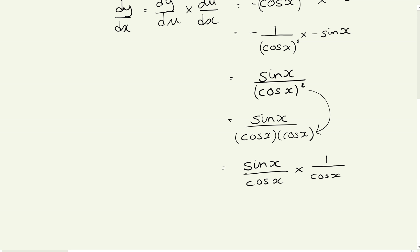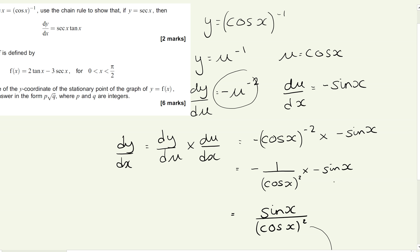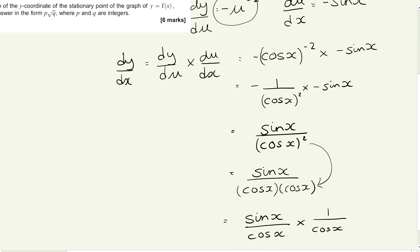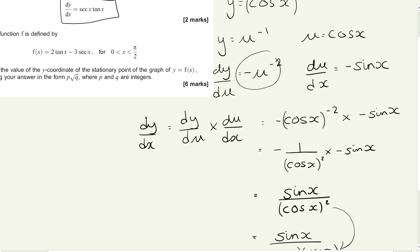So then looking at what we've got, we've got sin over cosine, which is tan x. And we've got one over cos, which is sec x. So I've got tan x times sec x or tan x sec x. And if we go back to the question, that was what we were looking to show that dy by dx was equal to sec x times tan x. So we've used the chain rule to multiply this out and then shown that we can split it into two parts. One is tan x and the other is sec x. So that's part A of that question. So that was worth the two marks at the beginning there.